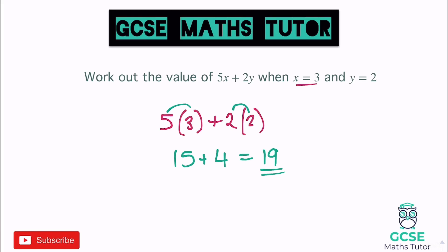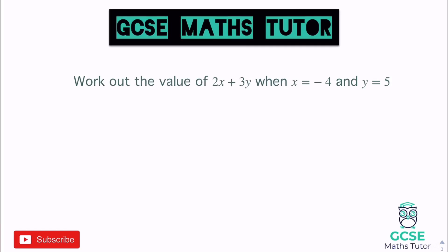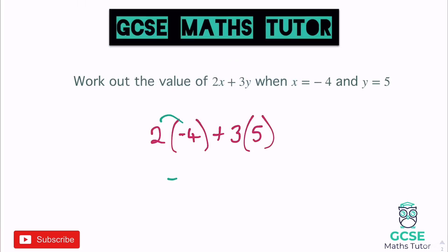So 19 is the value of 5x + 2y with those values. Now another one: work out the value of 2x + 3y when x is negative 4 and y is 5. This is where writing the brackets really starts to help. So we have 2 lots of negative 4, add 3 lots of 5. 2 lots of minus 4 is minus 8, and 3 lots of 5 is 15.